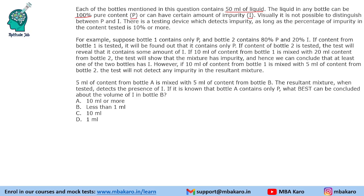Visually it is not possible to distinguish between P and I. There is a testing device which detects impurity as long as the percentage of impurity in the content tested is 10% or more. So if something is 92% pure, that cannot be detected because there is just 8% impurity. But if something is 85% pure, that will be detected because it will have 15% impurity. Up to 90% purity can be detected, meaning there should be a minimum 10% impurity.